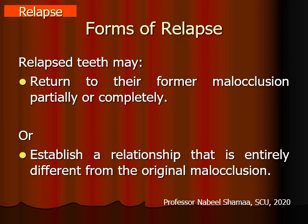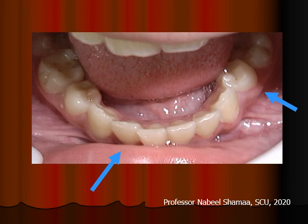Forms of relapse: relapses may return to their former malocclusion partially or completely, or establish a relationship entirely different from the original malocclusion. Here you can see a little bit of relapse of the lower lateral incisor. This is an extraction case where I did extraction of the four premolars. In the lower arch, you can see the return of the lower left second premolar — it is very obvious.